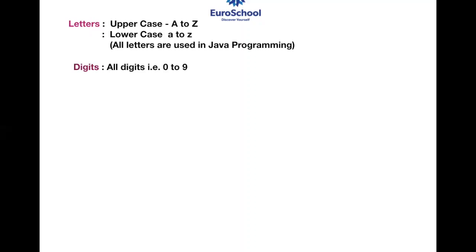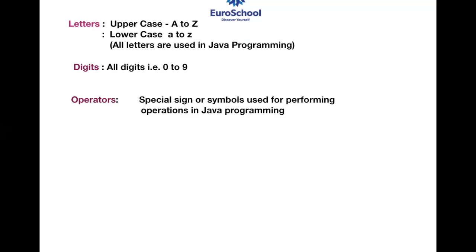The next one is digits. Digits are used for calculations. You have 0 to 9, and it could be a combination like 11, 21, 31 — any number which you can use for calculations. Then you have operators. Operators are special signs or symbols used for performing operations in a Java program. For example, plus and minus — when you want to do any mathematical calculation, you have to use some special sign or symbol which the computer can understand.